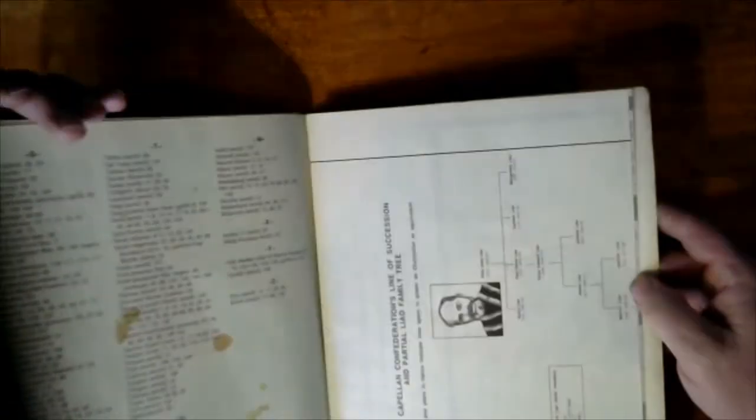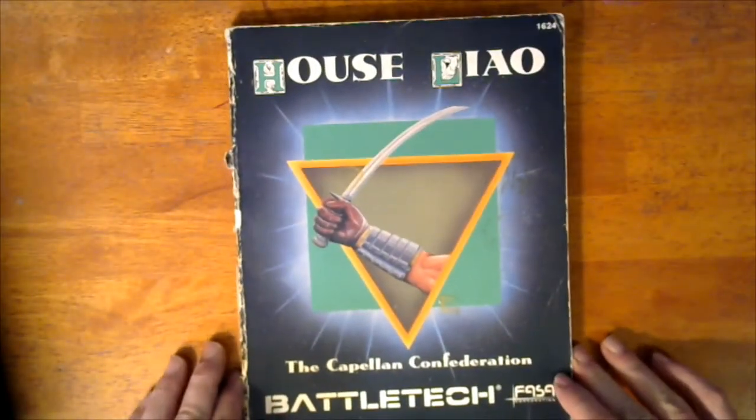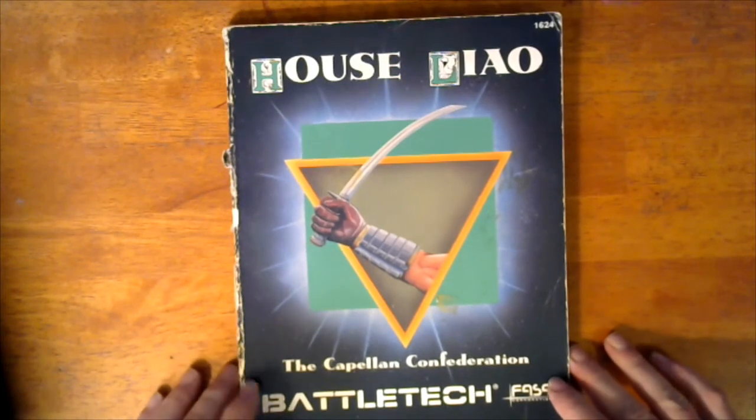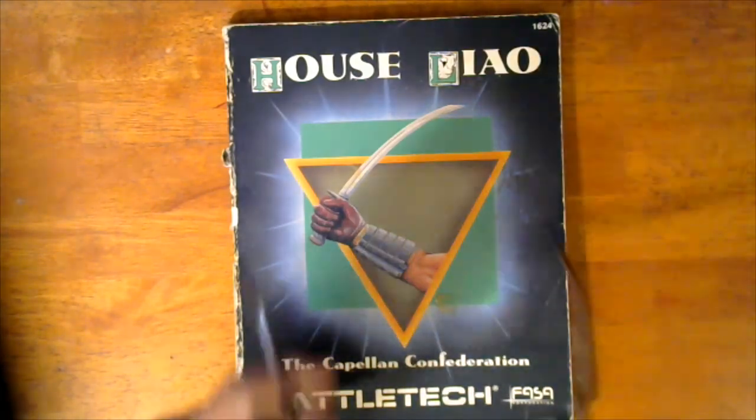Here's a family tree of House Liao. So that is House Liao - the smallest but not the most impotent house in the Inner Sphere. Until next time, this is Rick, and I hope you guys have a great weekend.